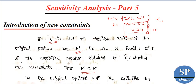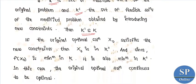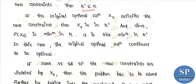Let's check the problem of x0: we have the original problem with optimal solution. If the original optimal solution x0 satisfies the new constraints, that is x0 satisfies the new constraints, then we proceed.